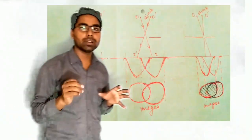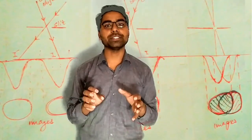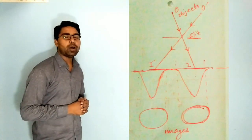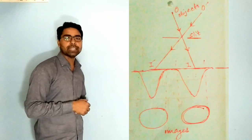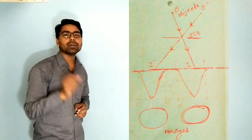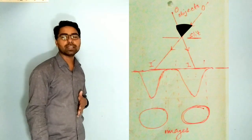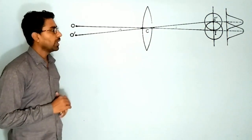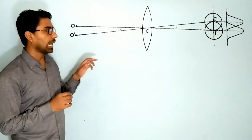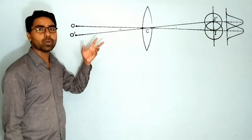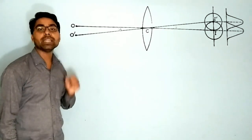Now you understand what resolving power is — to separate the images of two close objects. The next point is the limit of resolution. In the first diagram, object O and O-dash produce images I and I-dash. The rays go through a slit, and the angle between the rays of O and O-dash subtended at the objective — this is the limit of resolution, called alpha.